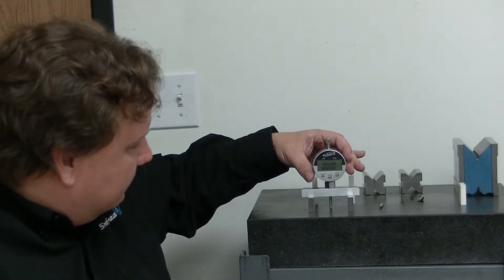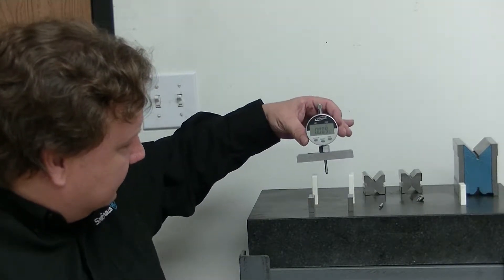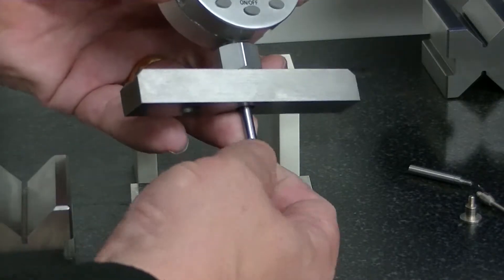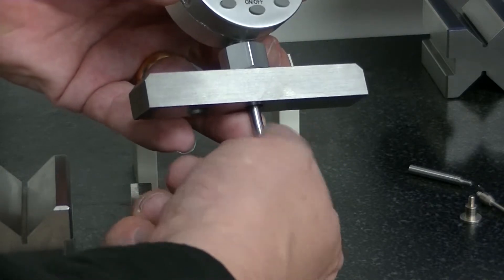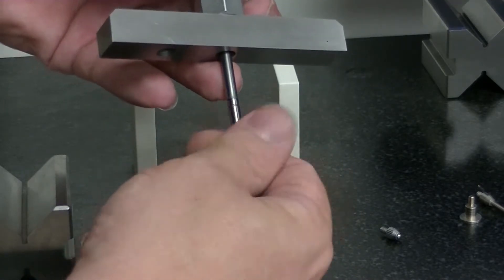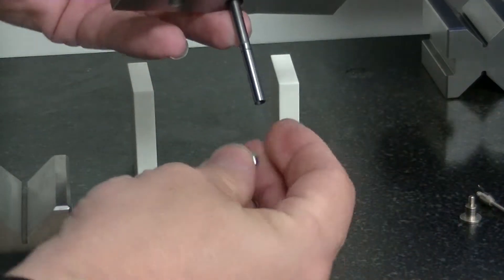And if I want to measure something deeper, like say I have these two-inch blocks here, I can actually remove the nose tip, put the one-inch extension. This has extensions all the way up to 16 inches. Put that on, put the nose piece back on.